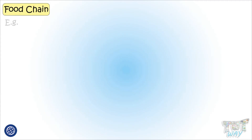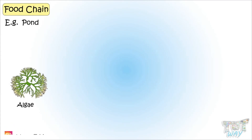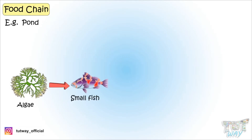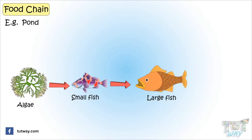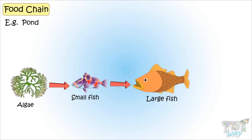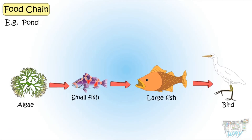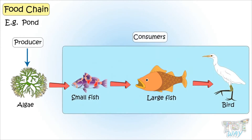Here we have a small food chain from a pond. First of all, algae is eaten by small fish. Small fish is eaten by larger fish. And larger fish is eaten by swans or eagles. In this food chain, algae is the producer, and the rest are all consumers.